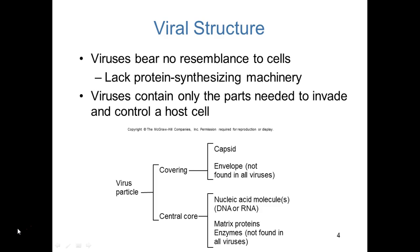Viruses lack any protein-synthesizing machinery — they have no ribosomes, so they are incapable of making their own proteins necessary for replication. They only contain the parts necessary to invade and control a host cell, making them very efficient. The virus particle has some type of covering, typically a protein called a capsid. Some viruses have an envelope coating the capsid, which is actually stolen from the host cell — the virus does not synthesize the envelope, though it does personalize it. The central core is the nucleic acid, and sometimes matrix proteins or enzymes are found inside with it.